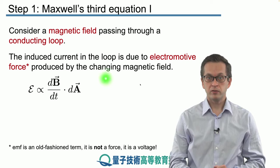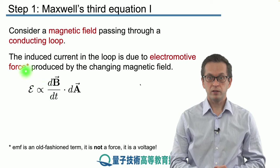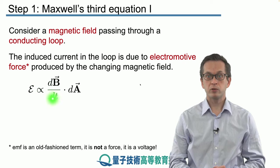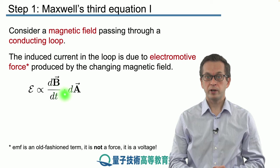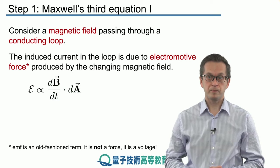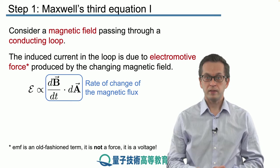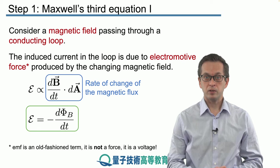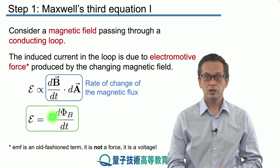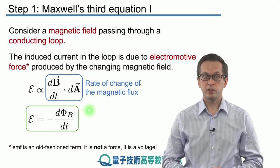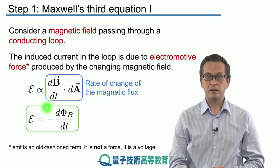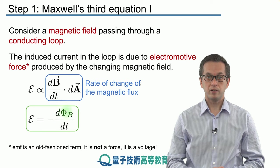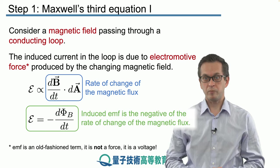We observe that the EMF, the electromotive force, is proportional to the change of the magnetic field dot product with the area. So we say that the electromotive force is equal to the rate of change of the magnetic flux. Now you see that there's a minus there. So why is there a minus? We're going to look at it in the following couple of slides.